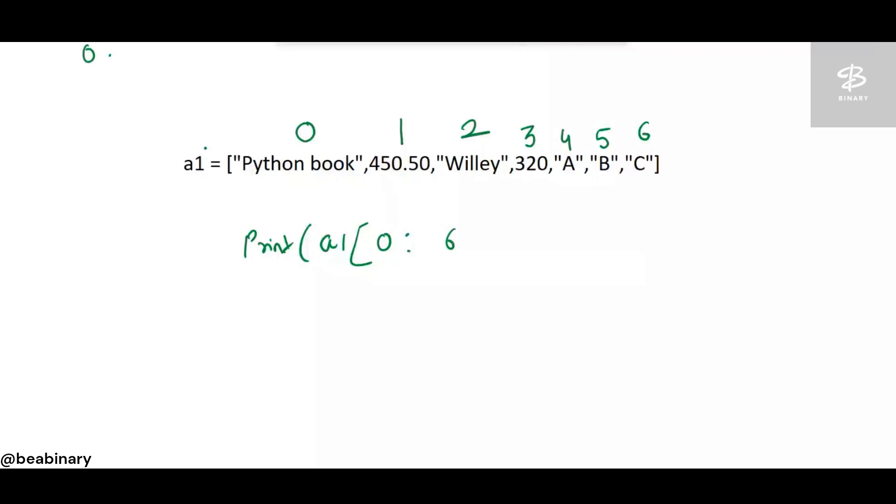This is the meaning, I hope you get the point. Python book would be printed because it is at 0 location. After 0, willy would be printed at 2, a would be printed. So I would run this program for you, observe the output.